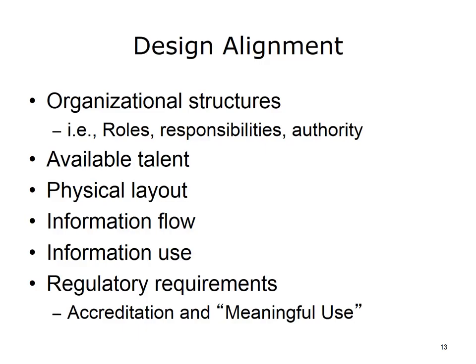Process design should also be evaluated for alignment with six key aspects. Organizational structures — i.e., roles, responsibilities, and authority — can be assessed by asking providers and staff: Who will perform this task? Is it within their scope of practice or training? Who needs to approve, review, or sign off? Available talent can be assessed by asking: Who will perform this task? Is this a good match for their abilities? Physical layout can be assessed by physically walking through processes to see if the traffic paths are likely to cause congestion, raise privacy concerns, or have extra steps.